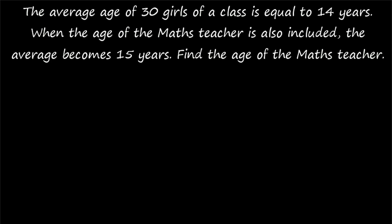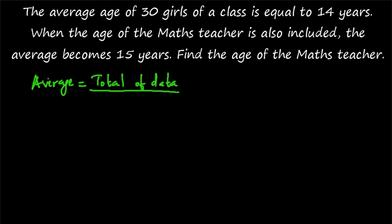This is our first question on averages. What is average? In order to find the average of n data, the average will always be equal to the total of data — or sum of the data — divided by the number of data. So if there are n data, the sum of n data divided by n gives you the average. Total of data divided by the number of data is the average. This is the basic concept of average, and using this we will be able to do many different kinds of problems.